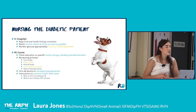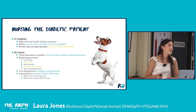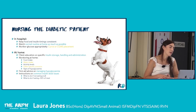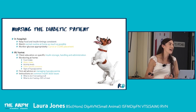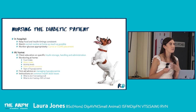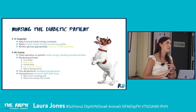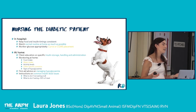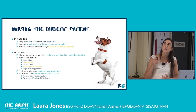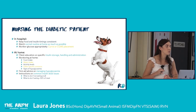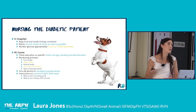Nursing considerations for stable diabetics in hospital focus mainly on glucose curves for ongoing monitoring. Our priority is keeping their routine as consistent as possible — matching insulin and meal timings to their normal home routine — to minimise any impact on glycemic control.